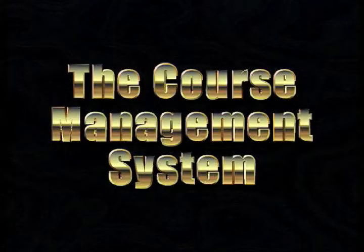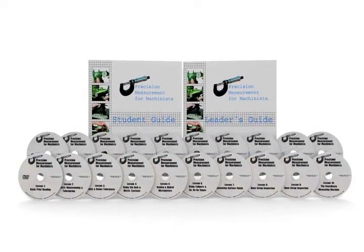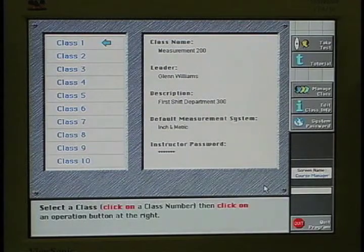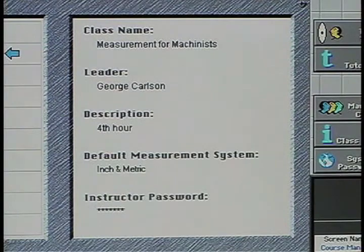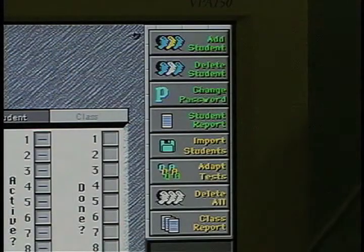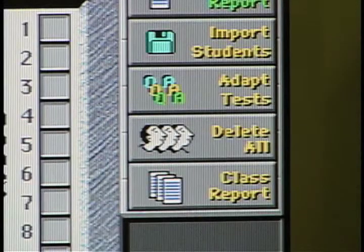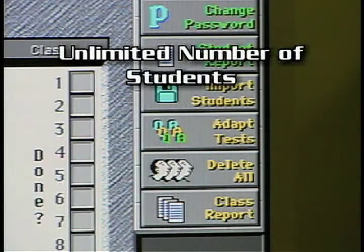The course management system. Whether you have one student or hundreds, the Master Task course can handle it. Ten classes of fifty persons each can be simultaneously entered in the computer. Each class is named and has a leader assigned. Once a class has completed their training, their records can be stored as a text file or printed out. The class can then be deleted and another class entered. Therefore, an unlimited number of students can be accommodated for years to come.